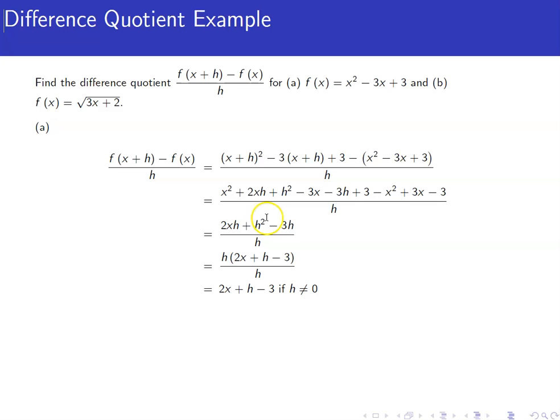We're left with 2xh and an h squared and a minus 3h on top. Now we can factor out the h. When we factor out an h, we get a 2x plus h minus 3. Now the h is canceled.